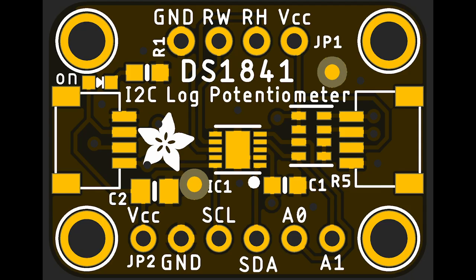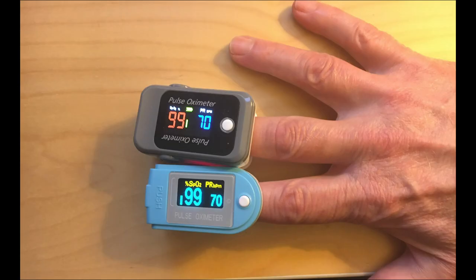Brian finished up the DS1841 library, including support for manually setting the wiper, editing and using the LUT, and enabling or disabling the temperature compensation feature. Now that we have a log potentiometer, he hopes to see more people using these handy little I2C helpers to give them programmatic control over parts of their circuit. Dan is in the Bluetooth low-energy device of the week world and is currently working on CircuitPython BLE drivers to connect a couple of different low-cost pulse oximeters. He's reliably getting data from one and found the other one difficult to work with.